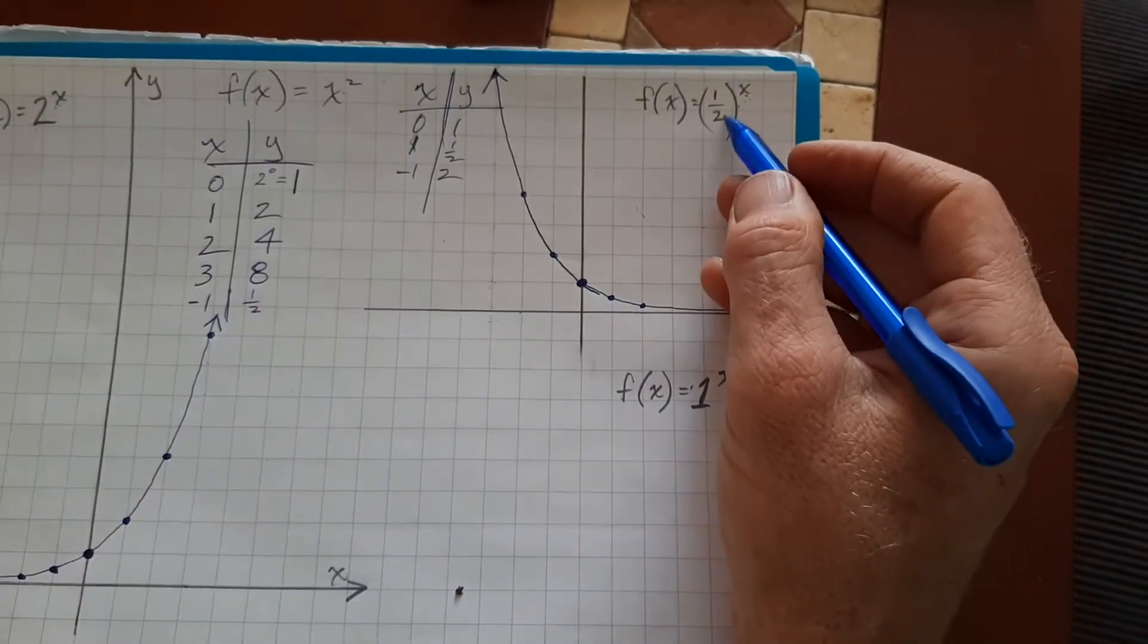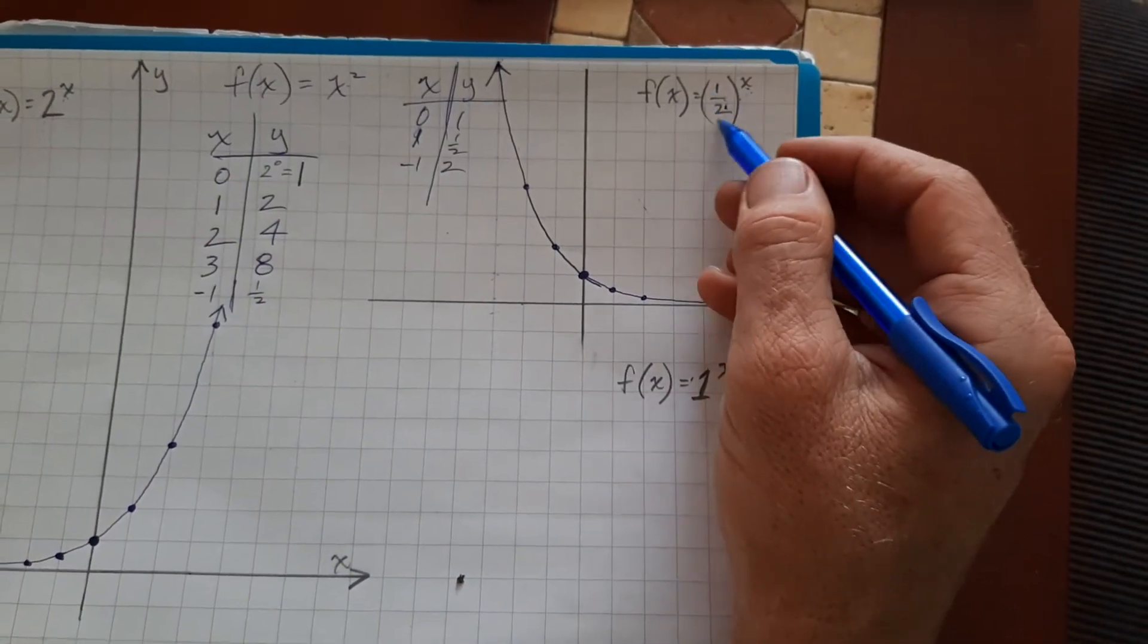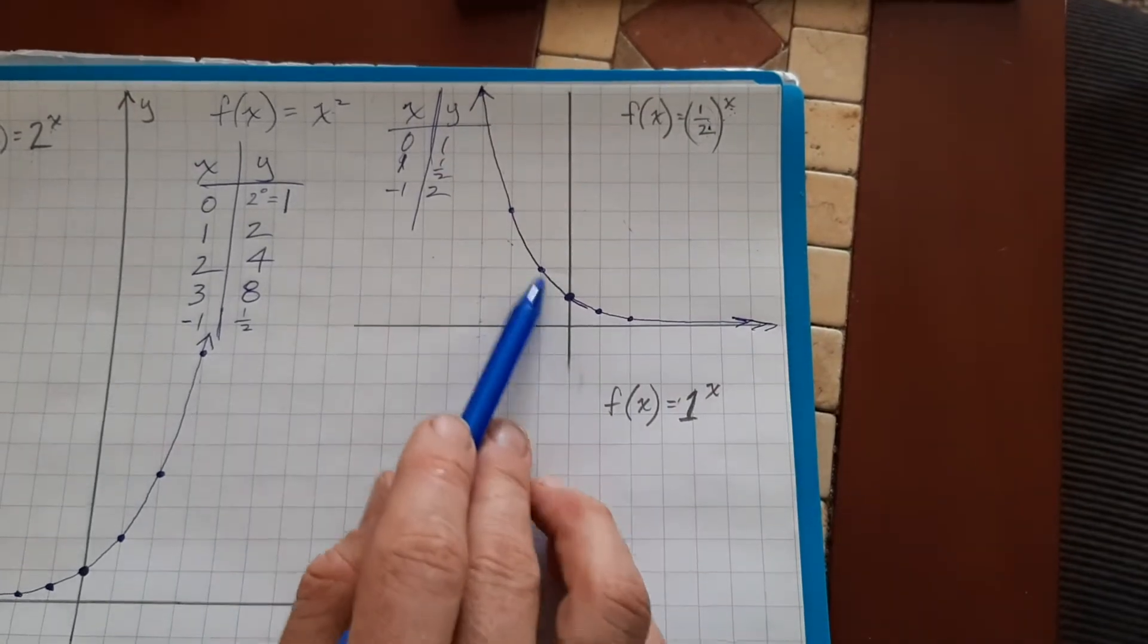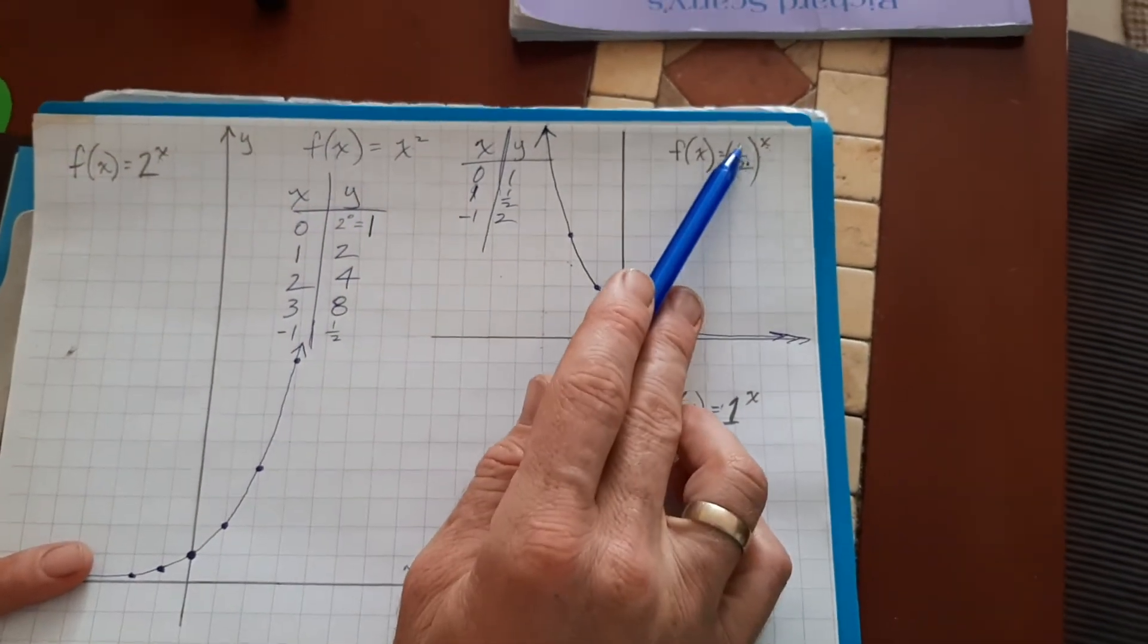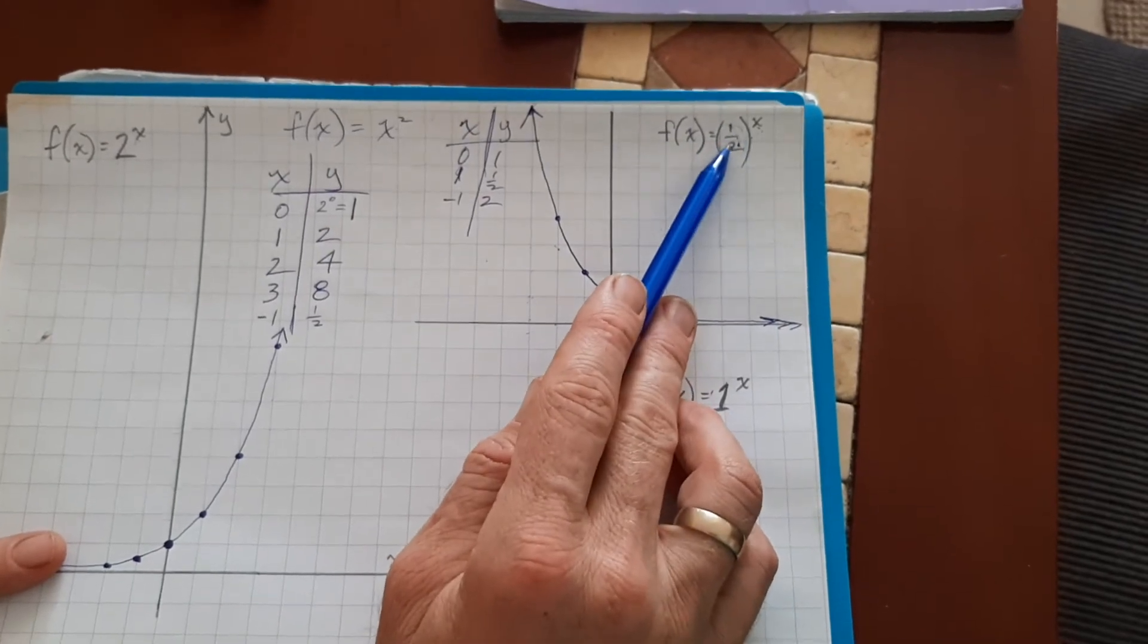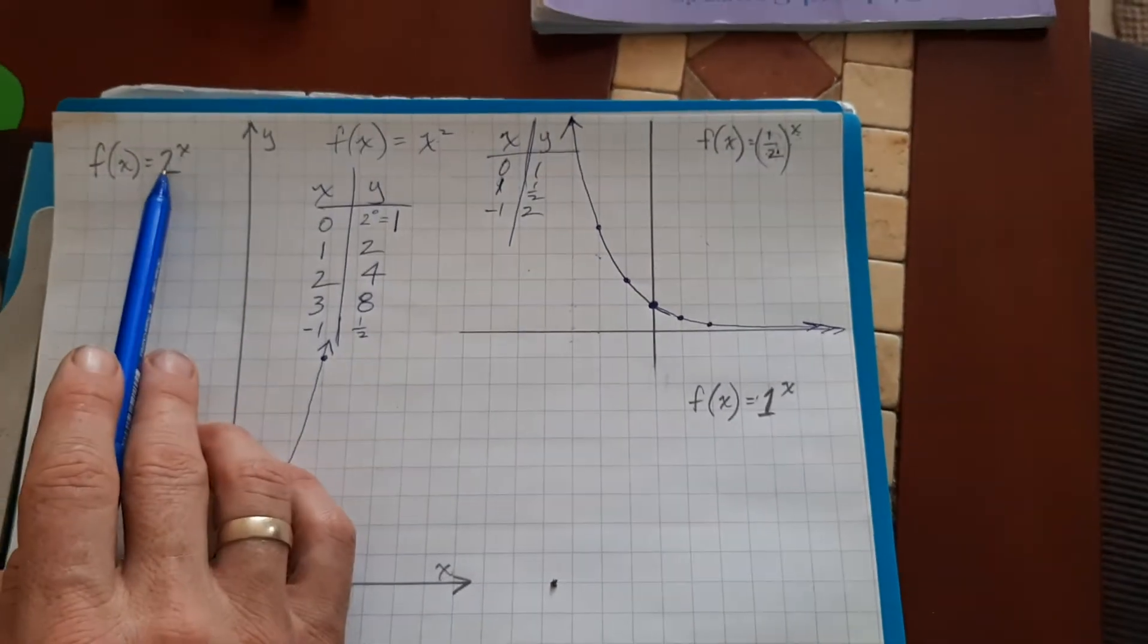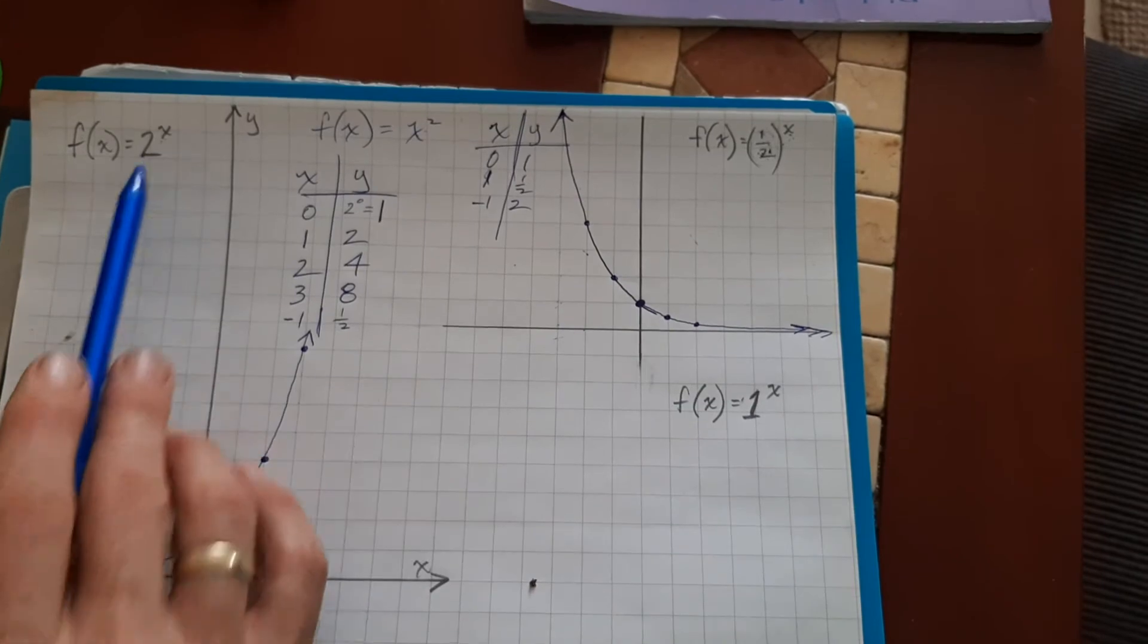F of x equals one half. If the fraction is less than one, it'll look like this. If it's a positive fraction, we're not going with negative base yet. And, if it's greater than one, it looks a lot like this. So, we'll just keep practicing this.